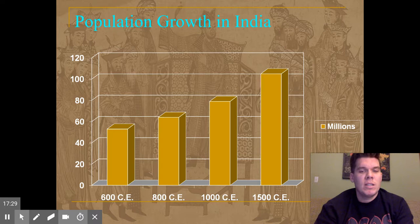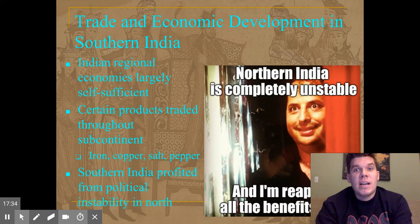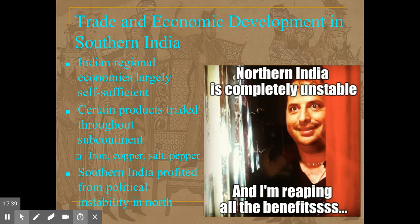In terms of trade and economic development, Indian regional economies were pretty self-sufficient — they were able to keep food for themselves pretty well. A few products were traded throughout the subcontinent, like iron, copper, salt, and pepper — easy to trade because none of those things spoil.